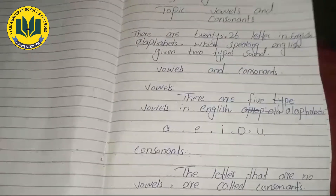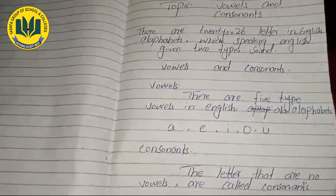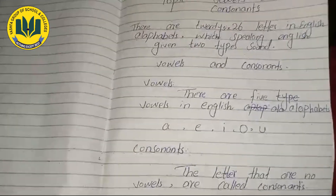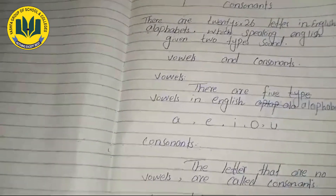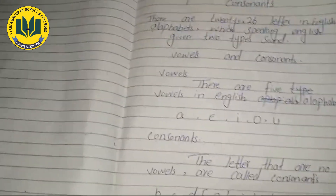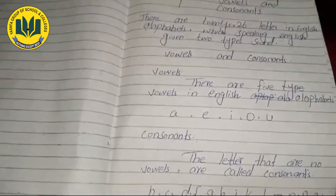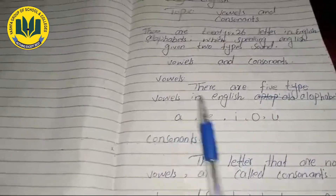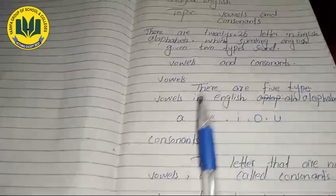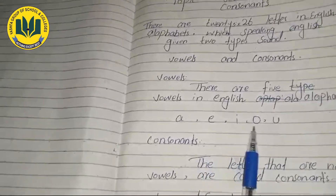There are five vowels in English alphabets. Which are the vowel sounds? A, E, I, O, U. Vowel sounds are five, and they are A, E, I, O, U.